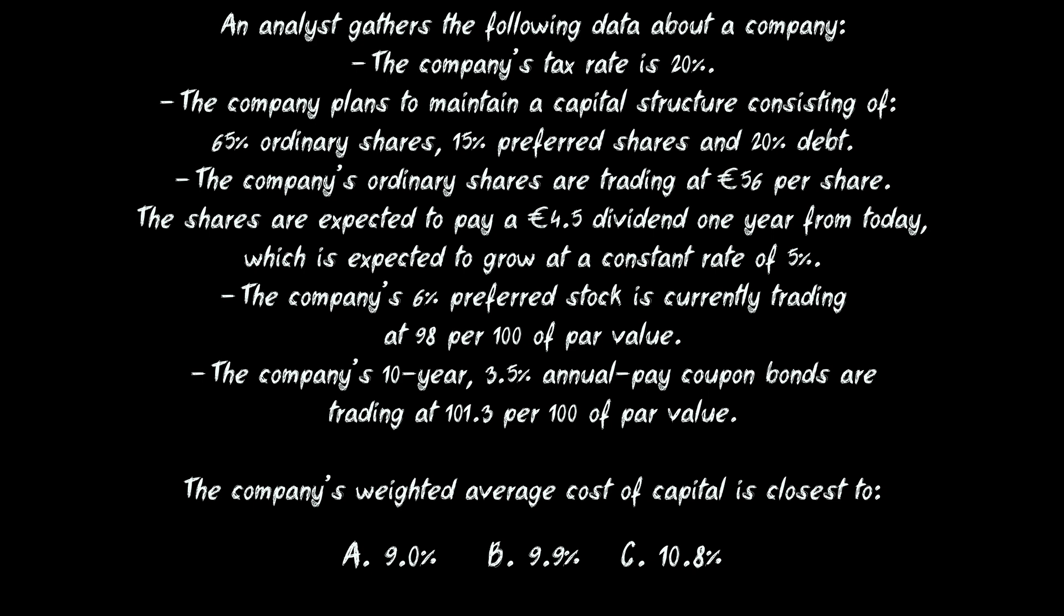The company's 6% preferred stock is currently trading at 98 per 100 of par value. The company's 10 year 3.5% annual pay coupon bonds are trading at 101.3 per 100 of par value. The company's weighted average cost of capital is closest to: A. 9.0%, B. 9.9%, or C. 10.8%.